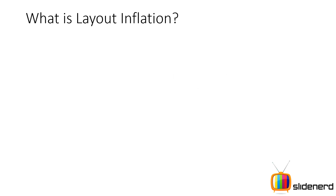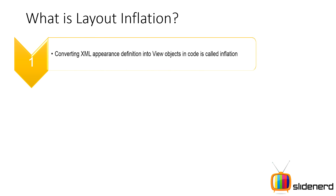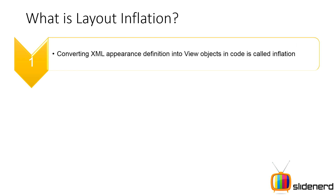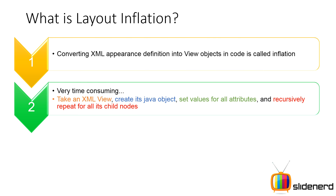That is why this video is dedicated to discussing all the complex aspects of how layout inflator works. If you're a beginner, the first question is: what do you mean by layout inflation? Well, converting XML appearance descriptions of your layouts into Java view objects that you can use inside your code is called inflation. This is also a very time-consuming operation — your LinearLayout has layout_width, layout_height, orientation, and your TextView has background and other attributes that all have to be converted into Java values.